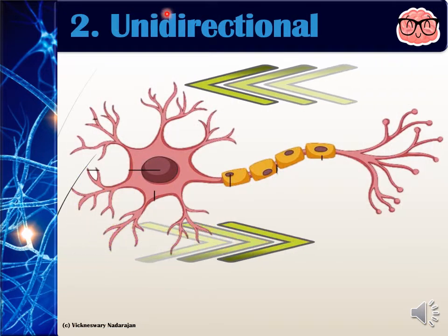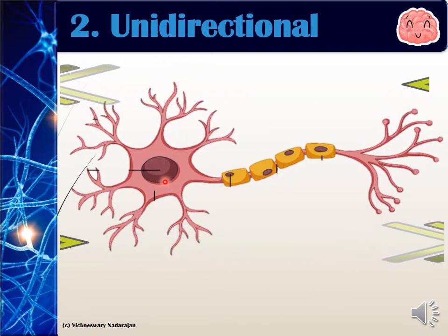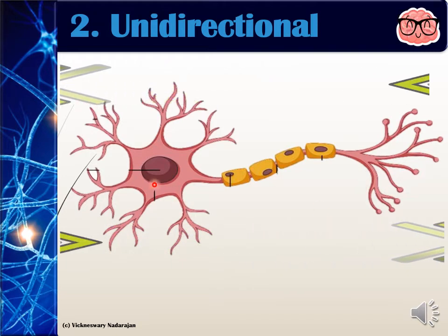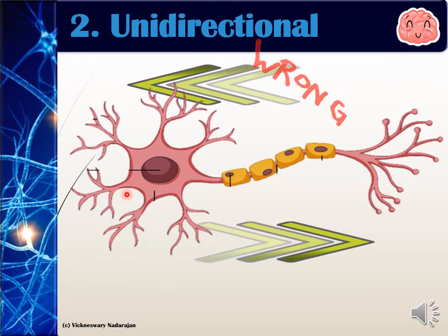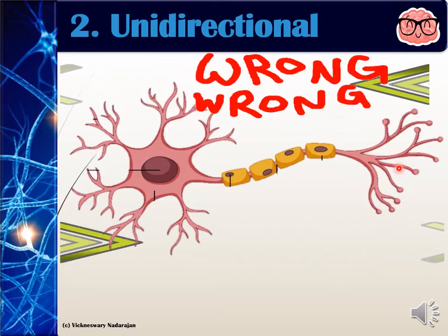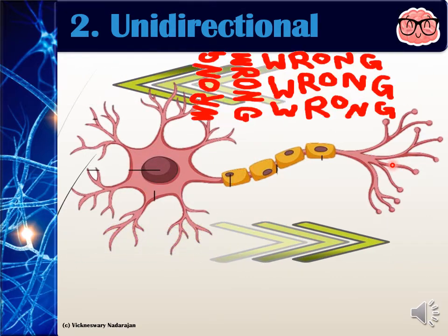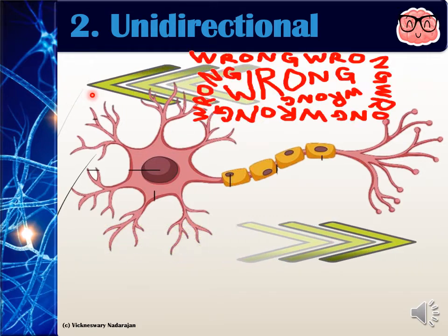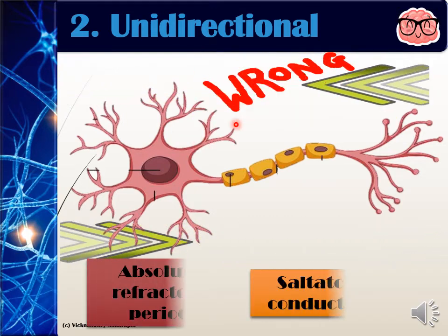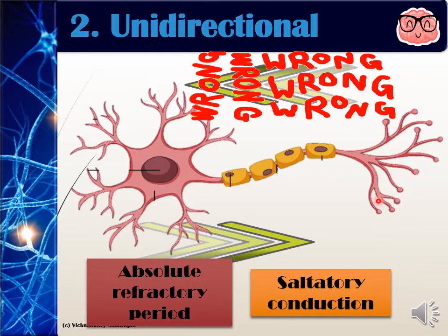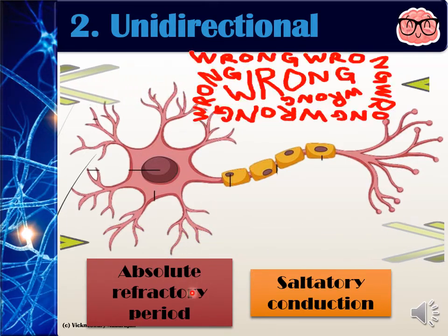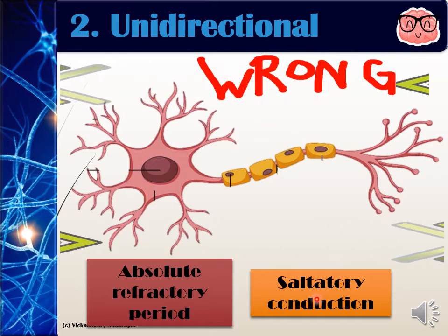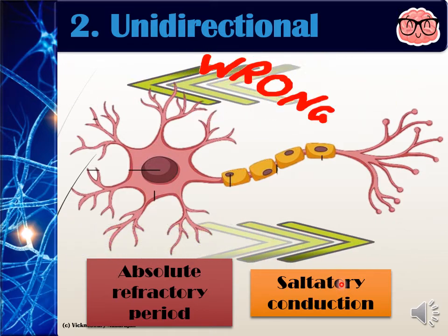The second characteristic is that transmission of impulse is unidirectional, meaning that it is always in the direction from the cell body to the axon terminal. It is never in the opposite direction. The reason is actually because of two factors: one is related to the absolute refractory period, and second is due to saltatory conduction.